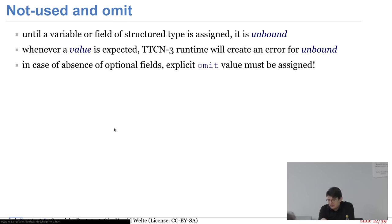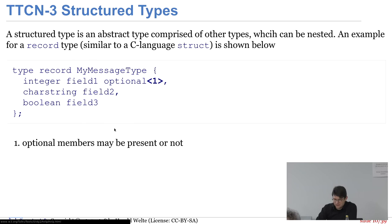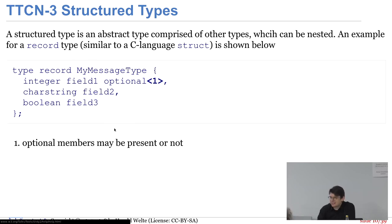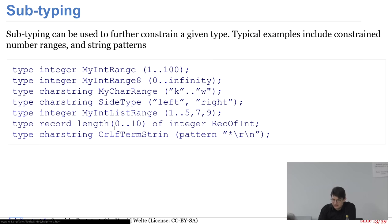Wenn ich optionale Felder habe, muss ich sie explizit auf Omit setzen. Also ich muss sagen, dieses Teil der Nachricht ist explizit nicht Teil davon – Field 1 ist omit. Damit ist klar, dass ich dieses optionale Feld nicht mit übersenden möchte.